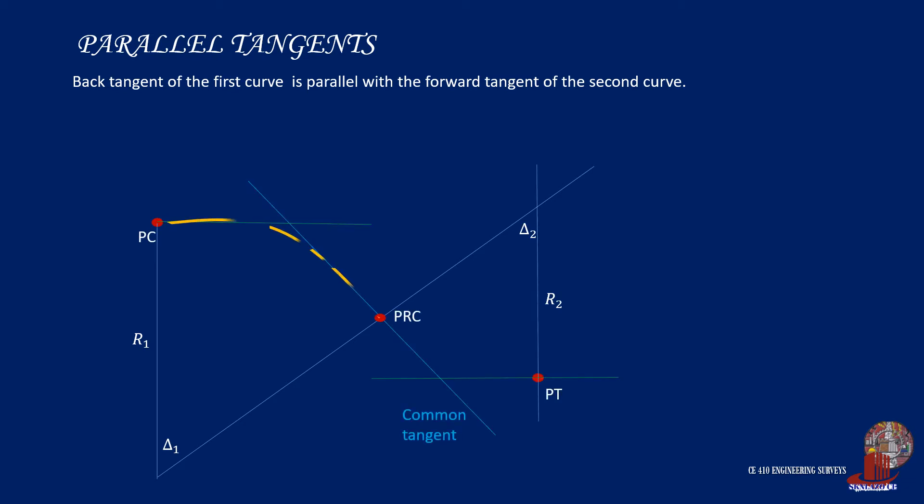The tangents of a reverse curve are taken as the back tangent of the first curve and the forward tangent of the second curve. In parallel tangents, these two elements of the different simple curves are parallel. In this type of tangents, the perpendicular distance between the two parallel tangents is denoted as P. From PRC, P can be computed as the distances M1 and M2. So P is computed as M1 plus M2.